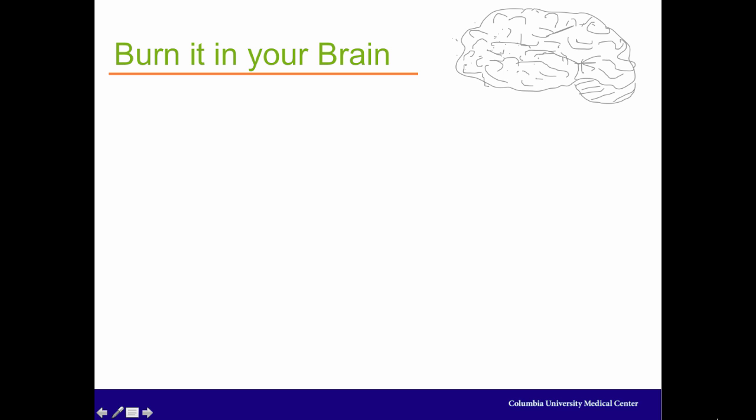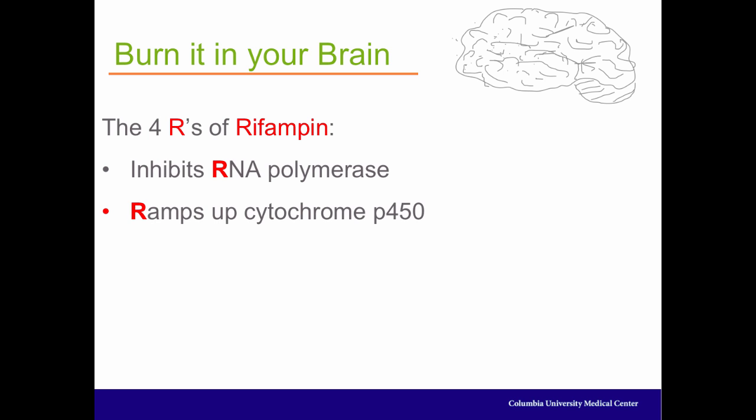So now you know the basics of rifampin. And if you want to tie all this up into a nice mnemonic taken from first aid, you can always remember the four R's. Rifampin acts by inhibiting RNA polymerase. Rifampin ramps up cytochrome P450, which is what gives it the drug-drug interactions. Rifampin causes you to have red-orange urine. And bacteria rapidly become resistant when you use rifampin alone.